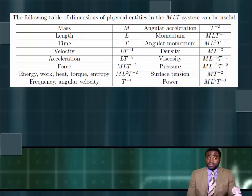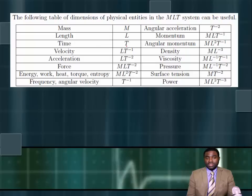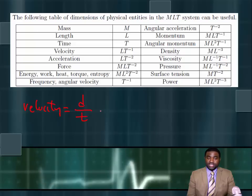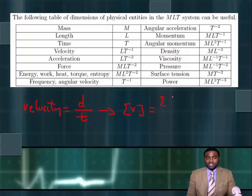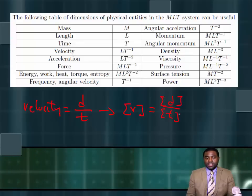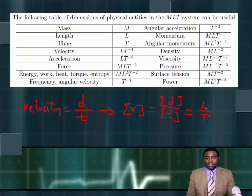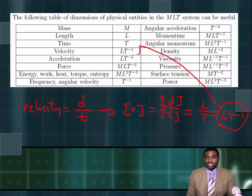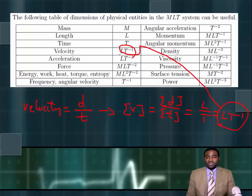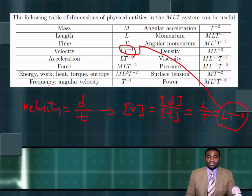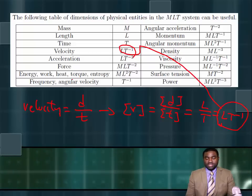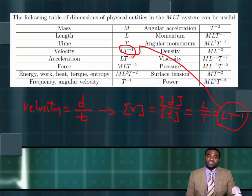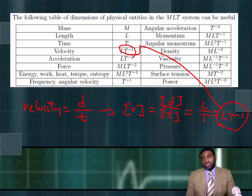Here are some common dimensions. The dimension of mass is capital M. The dimension of length is capital L. The dimension of time is capital T. Velocity is defined as displacement over time, which means the dimensions of velocity is the dimensions of displacement divided by the dimensions of time — this is L over T, which is L T minus one. This table gives you the dimensions of some very common physical quantities that you will encounter in this course.